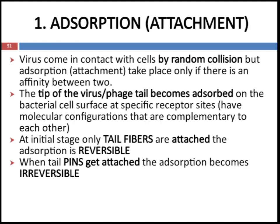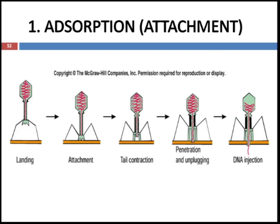The first stage is adsorption or attachment. This is the stage in which the virus comes in contact with the cell by random collision. However, during random collision not all viruses will attach to the host cell. Adsorption will take place only if there is an affinity between the virus and the bacteria or cell. The tip of the virus or phage tail becomes adsorbed on the bacterial cell surface at specific receptor sites, and they have molecular configurations that are complementary to each other. At the initial stage only tail fibers are attached — this stage is reversible.